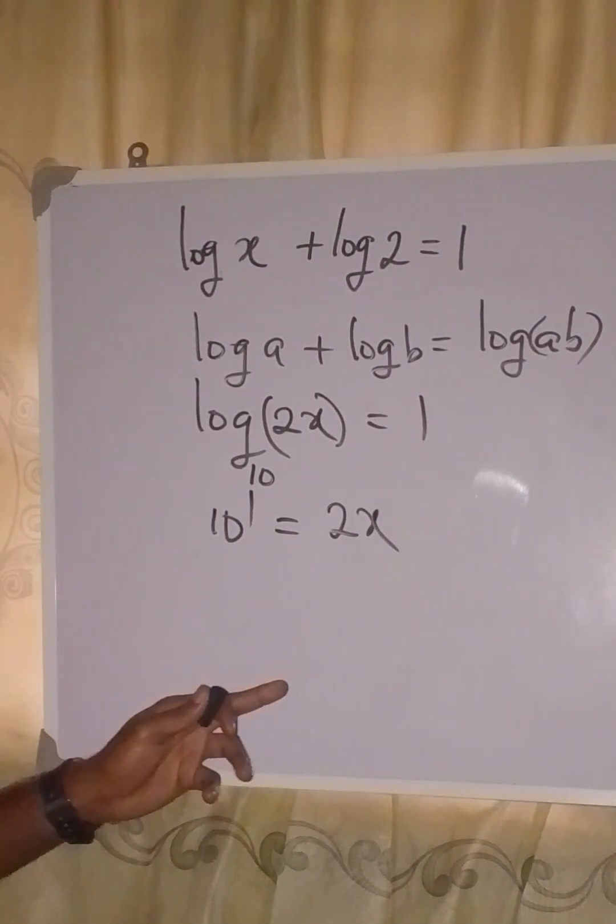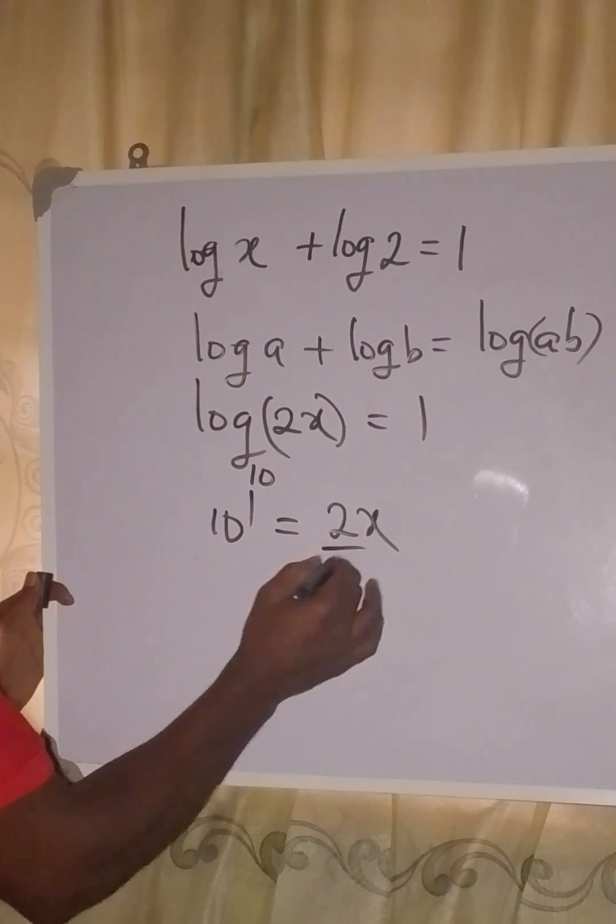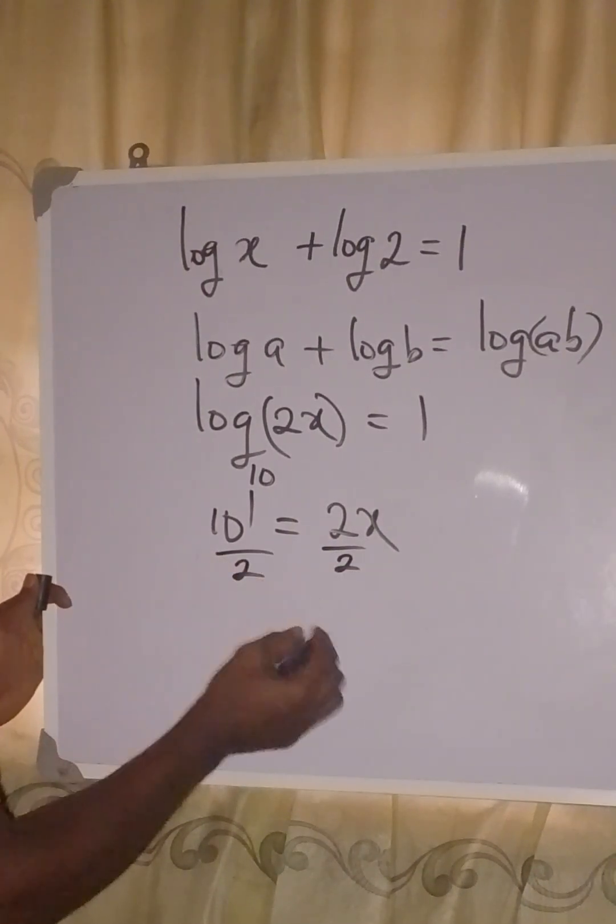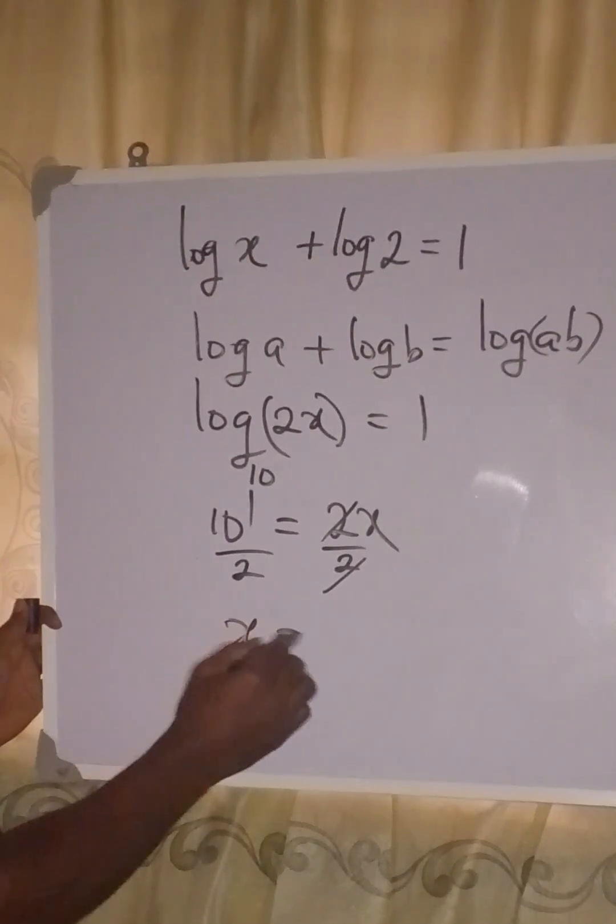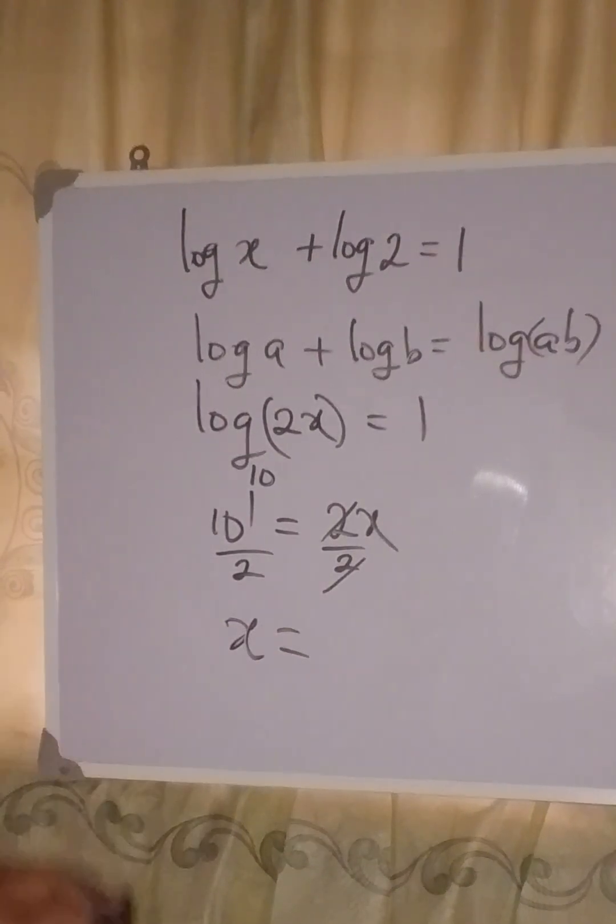10 to the power of 1 is the same thing as 10, right? So we can just divide this by 2 and divide this by 2. This will go with that, now x is alone.